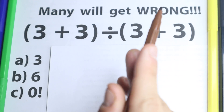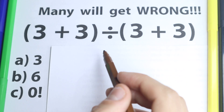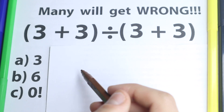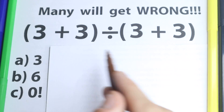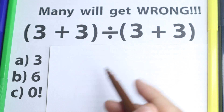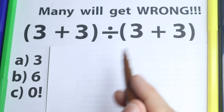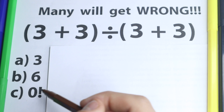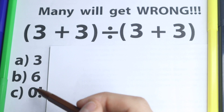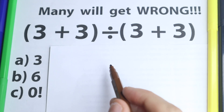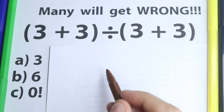I suggest you pause the video and try to solve it by yourself. It's a really great test to check your answer at the end of the video. We have three answer options: 3, 6, and 0 factorial.